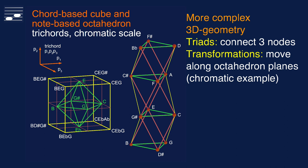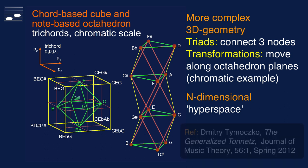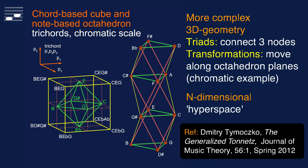Connecting three neighboring nodes we obtain triads. And transformations correspond to moving to a neighboring triangle, a different octahedron plane. For chords with more than three notes, this would yield an N-dimensional hyperspace. An elegant theoretical concept, but one that I find impossible to use as a practical composition tool. Here's the reference to the article, in case you're interested in generalizations of the Tonnetz.